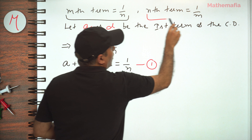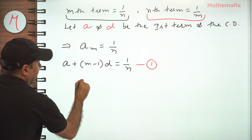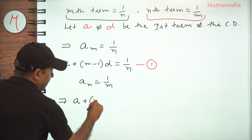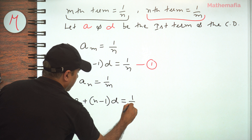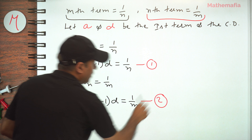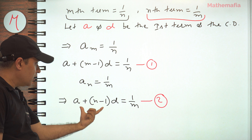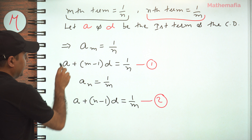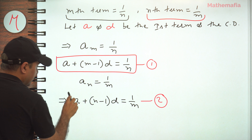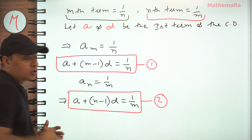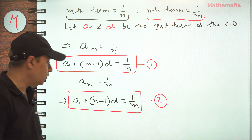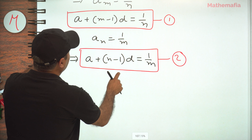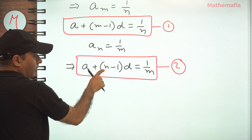Similarly, from the second condition, aₙ = 1/m, which gives us a + (n−1)d = 1/m. Let's call this equation number 2. Now we have two linear equations in terms of a and d. We need to solve these equations and find the values of a and d in terms of m and n.